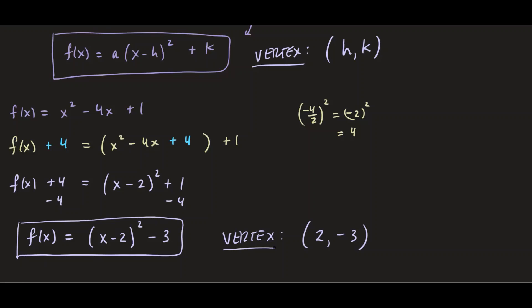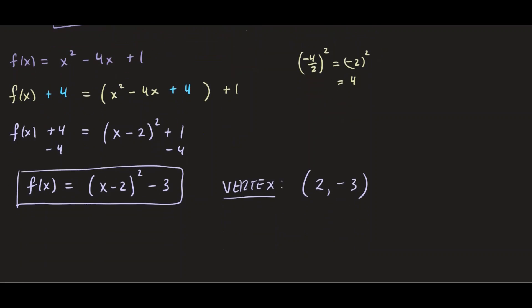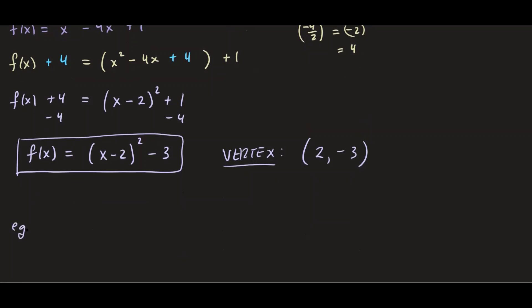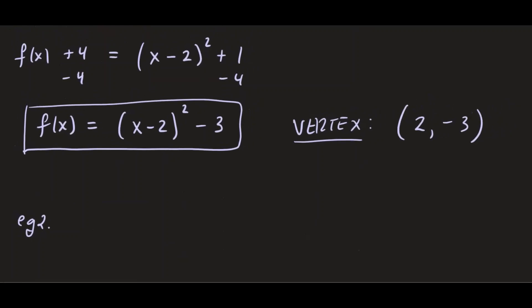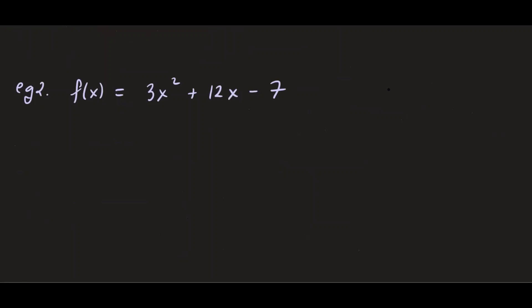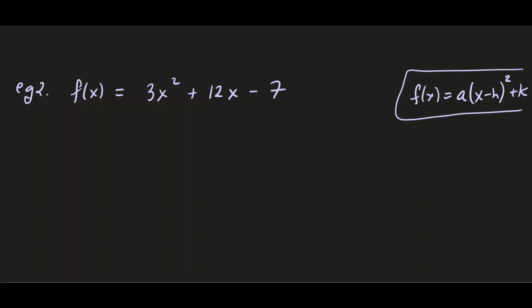Now let's do another example so you can practice a little bit more. This is Example 2: f(x) = 3x² + 12x - 7. Our goal is to write this in standard form, f(x) = a(x - h)² + k. Let's complete the square. On the right side we group 3x² + 12x together and leave -7 outside.